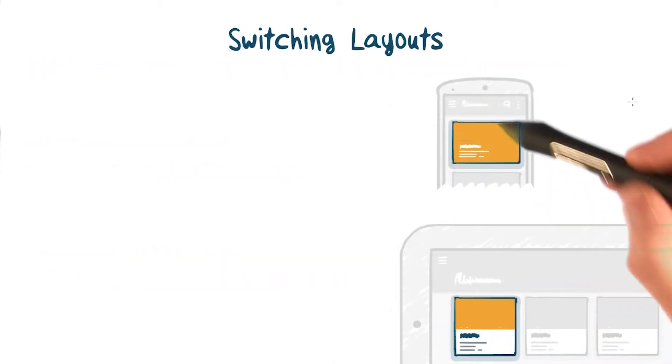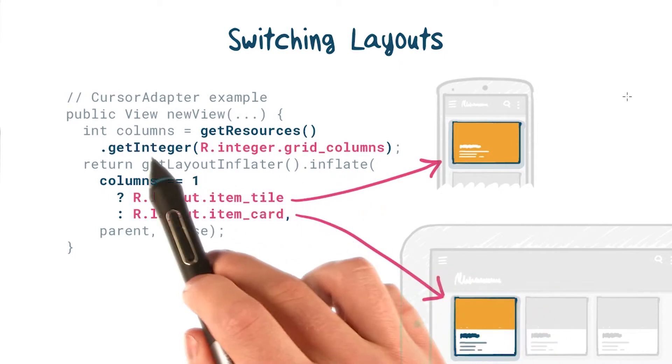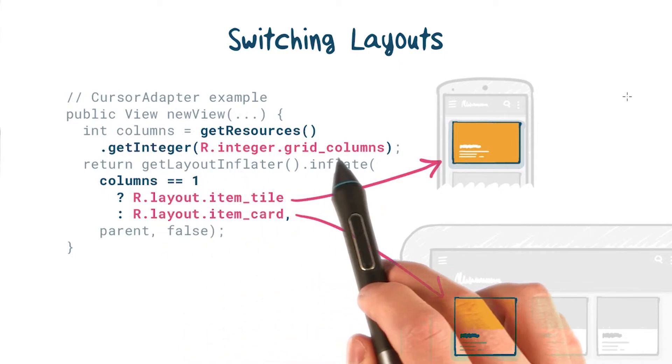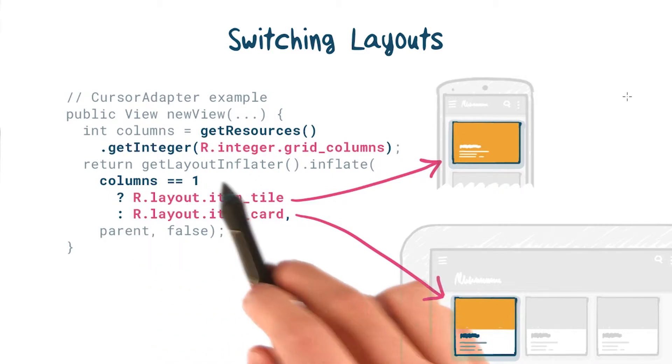When switching from a list type presentation to a grid, you'll likely want to use a different layout for each item. To do this, you can access your column count integer resource from code in your adapter, and use that to decide which layout to inflate.